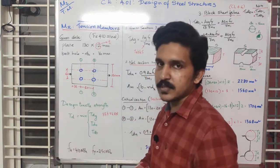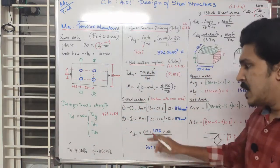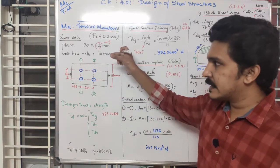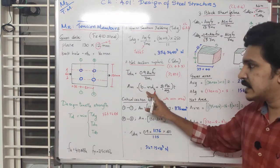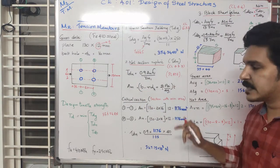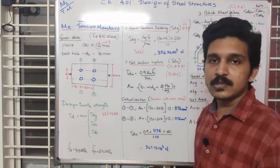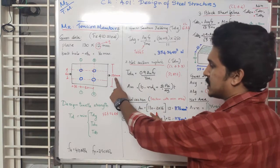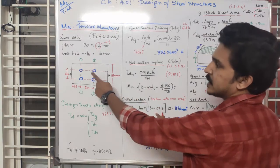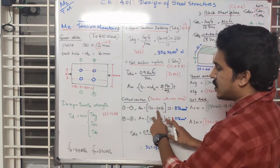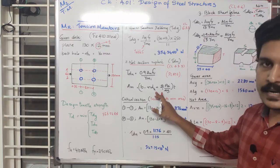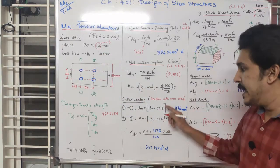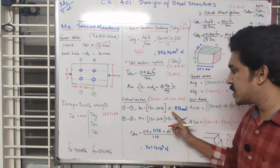For section 1-1, the net width equals B minus N times d, where B is 130 mm, N is 2 bolts, and d is 16 mm (bolt diameter). Thickness is 12 mm. The psi term for no stagger is 1.0. This gives the net area for section 1-1.